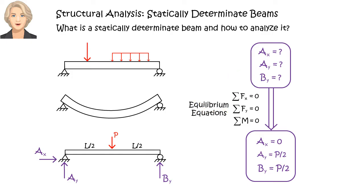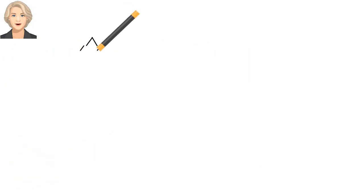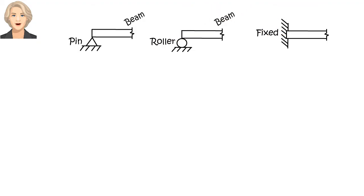And how do we analyze such a beam? Before we can answer the question, let's review reaction forces in beams. The three most common beam support types are pin, roller, and fixed support.